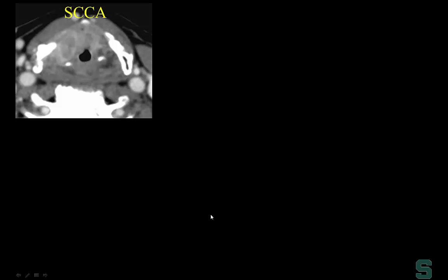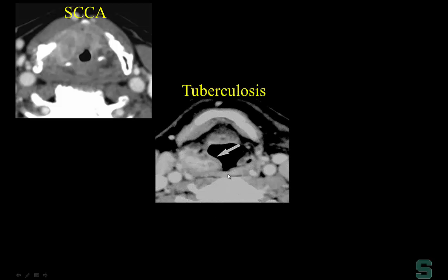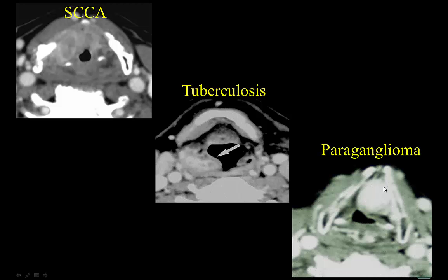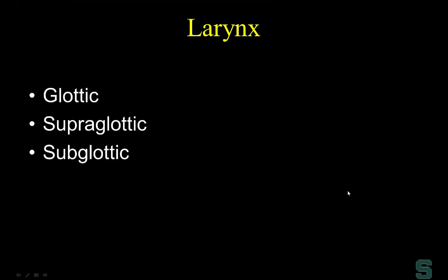One lesson in radiology is that imaging manifestations can be protean. This is a pathologically proven case of tuberculosis that could easily be mistaken for squamous cell carcinoma. On the other hand, this densely enhancing mass is a submucosal paraganglioma — an unusual case with a different appearance that tips you off to a highly vascular lesion. Now let's talk anatomy.